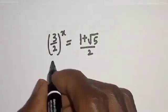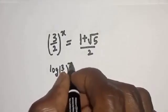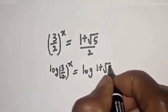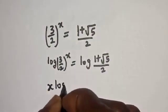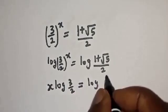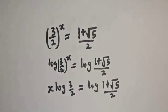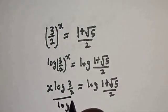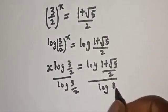Now let's take the log of both sides: log of (3 over 2) raised to power s equals log of (1 plus root 5) over 2. This gives s times log(3 over 2) equals log of (1 plus root 5) over 2. Dividing both sides by log(3 over 2), we get s equals log[(1 plus root 5) over 2] divided by log(3 over 2).